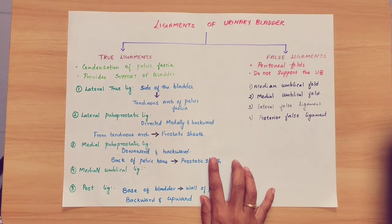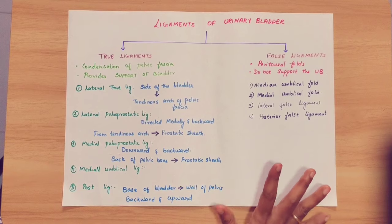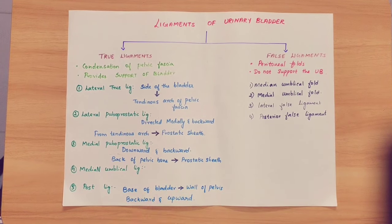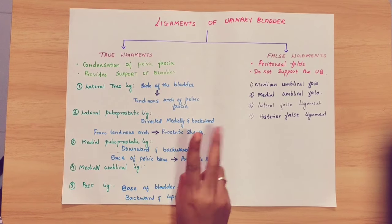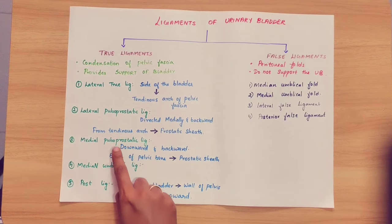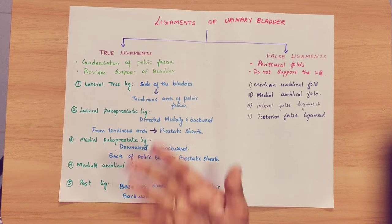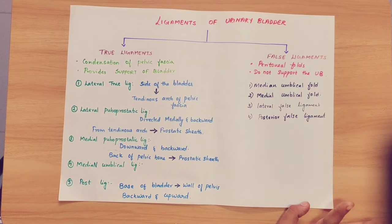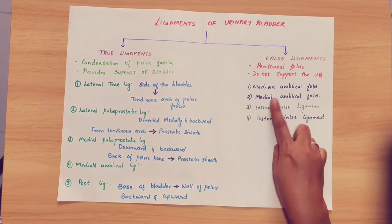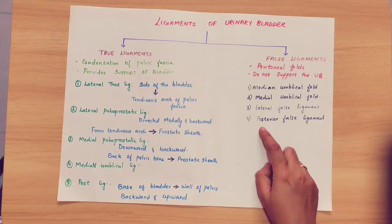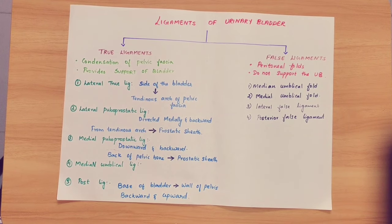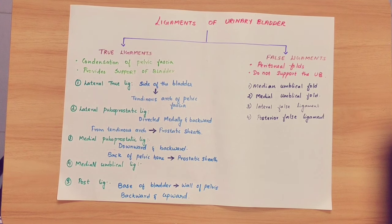So these are the ligaments of the urinary bladder. It is not an extremely complex topic, but you have to know the names. True ligaments — there are five: lateral true ligament, pubo-prostatic ligament (medial and lateral), medial umbilical ligament, and posterior ligament. False ligaments: medial umbilical fold, lateral false ligament, and posterior false ligament. Thank you for watching. Please like, share, and comment. If you have any doubts or suggestions, please let me know in the comment section below.